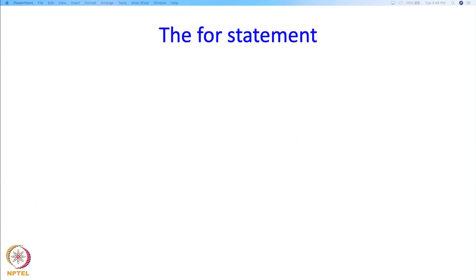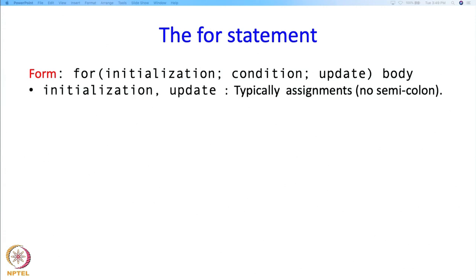So the general structure of the for statement looks like the following. Inside parentheses, first we have the initialization, followed by semicolon, followed by a condition, followed by an update, and then the body. The initialization and the update are typically assignments — they could be other things, but typically assignments. There is a semicolon immediately after the initialization but after the update there is no semicolon, so that is something to keep in mind.